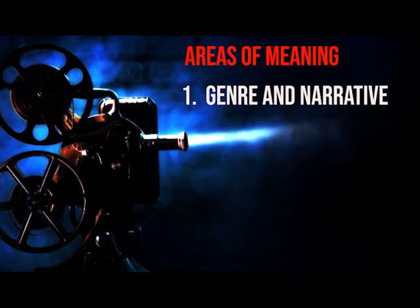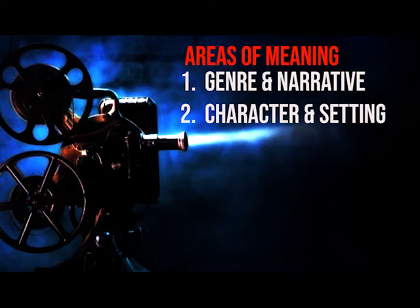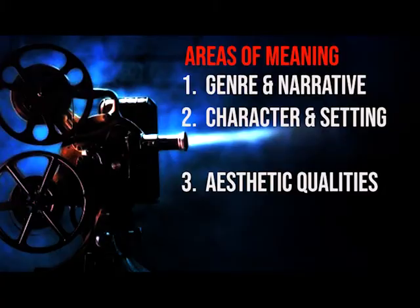Genre and narrative: you don't want to spend much time on this as these are the more obvious points. It might provide a nice way to introduce a sequence — for example, in Pan's Labyrinth the pale man scene is quite fantastical and horrific, more so than any other part of the film. It's a decent starting point into more in-depth analysis, but don't dwell on it too much. Character and setting: what do we learn about the characters or the place it's set in? It's quite easy to get bogged down in simple points here, so be careful about what you choose to include.